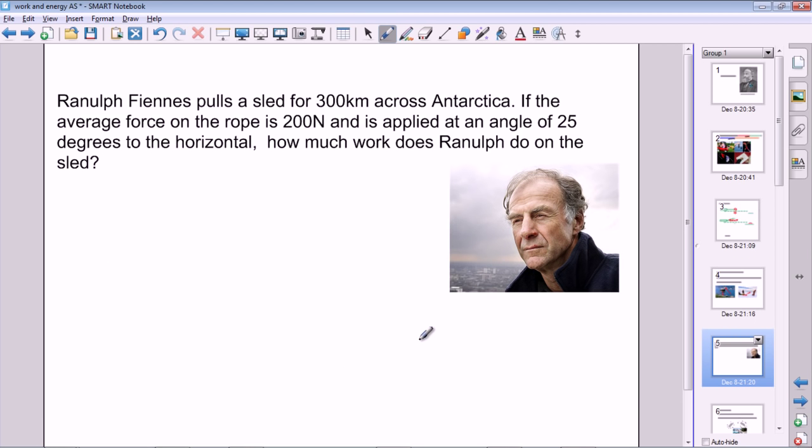And here's a numerical example where we have a distance moved 300 kilometers and an average force that Ranulf is pulling on the sled, and the angle between them being 25 degrees. So here we would just use work is equal to force times distance times cosine of theta. And we would just put in the numbers there and multiply the whole lot together and get our answer, which you can do if you like, and we might go through that one in class.